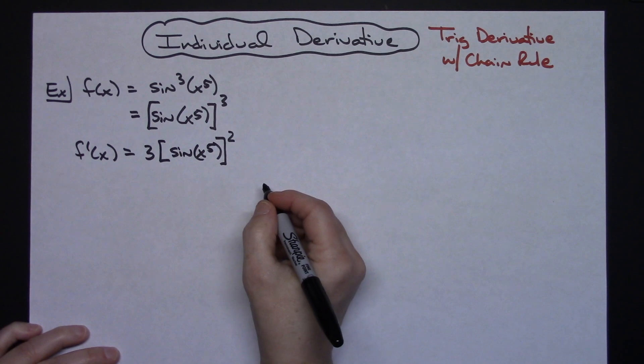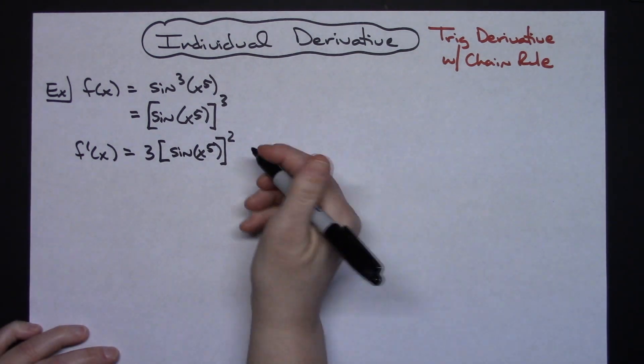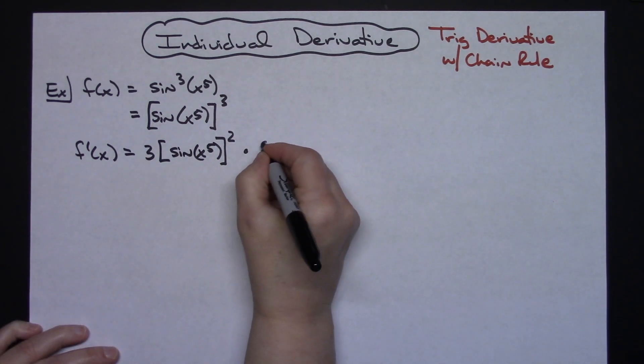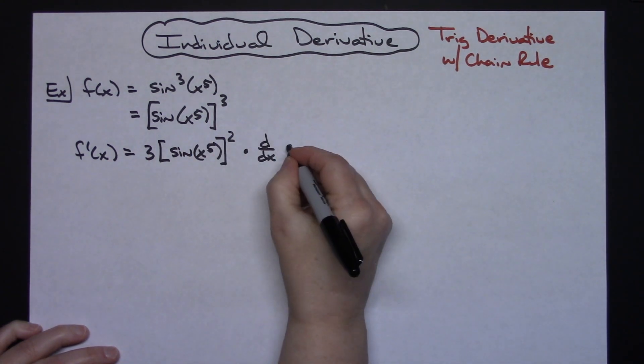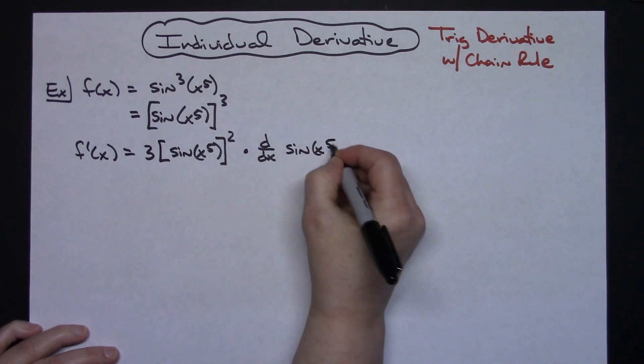We subtract one from the exponent and then comes the times the chain. So times d dx of that inside function. The inside function was sine x to the fifth.